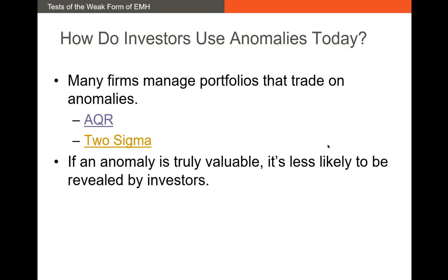One obvious point worth making: if an anomaly is truly valuable and I'm an investor, I would never want to reveal that information. Academics have the incentive to publish, so they're trying to find some of these anomalies and are more likely to let the world know about them. But a lot of investors, if they find an anomaly, are not going to reveal information about it — they're going to keep trading on it. Usually, once these anomalies become widely known, the overwhelming majority of them just kind of disappear.